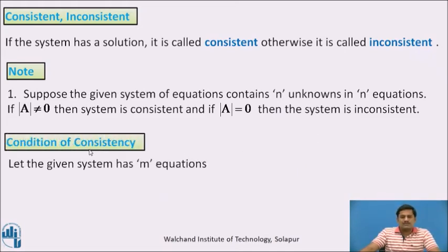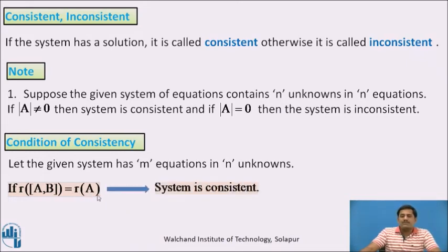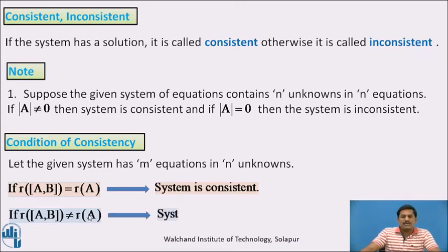Condition of consistency: Let the given system have m equations in n unknowns. If the rank of the augmented matrix [A|B] is exactly equal to the rank of the matrix A, then the given system is consistent. If the rank of the augmented matrix [A|B] is not equal to the rank of matrix A, then the system is inconsistent. These two conditions are used to check the consistency of the system.